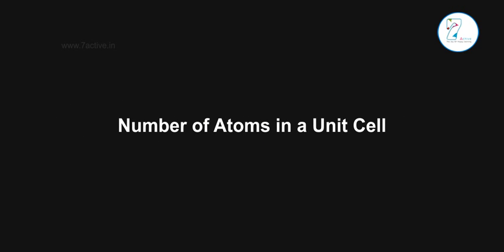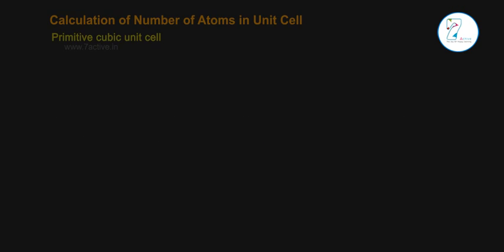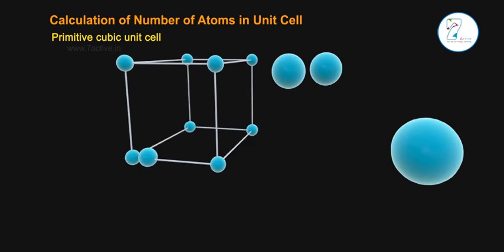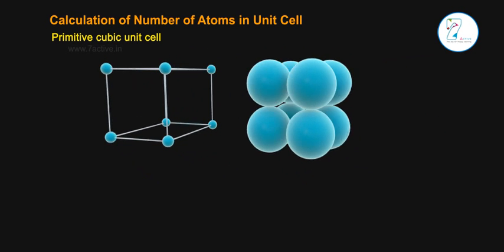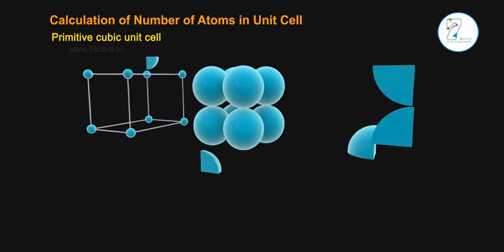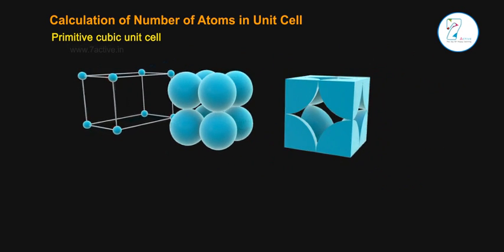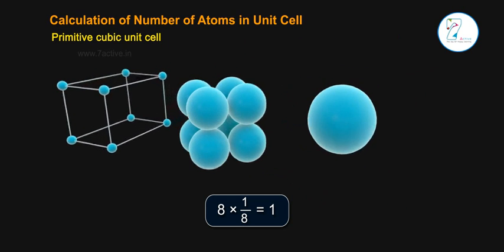Calculation of number of atoms in unit cell. Primitive cubic unit cell: In this type of unit cell, the constituent particles occupy the eight corners. So the total number of atoms in one unit cell is 8 × (1/8) = 1 atom.